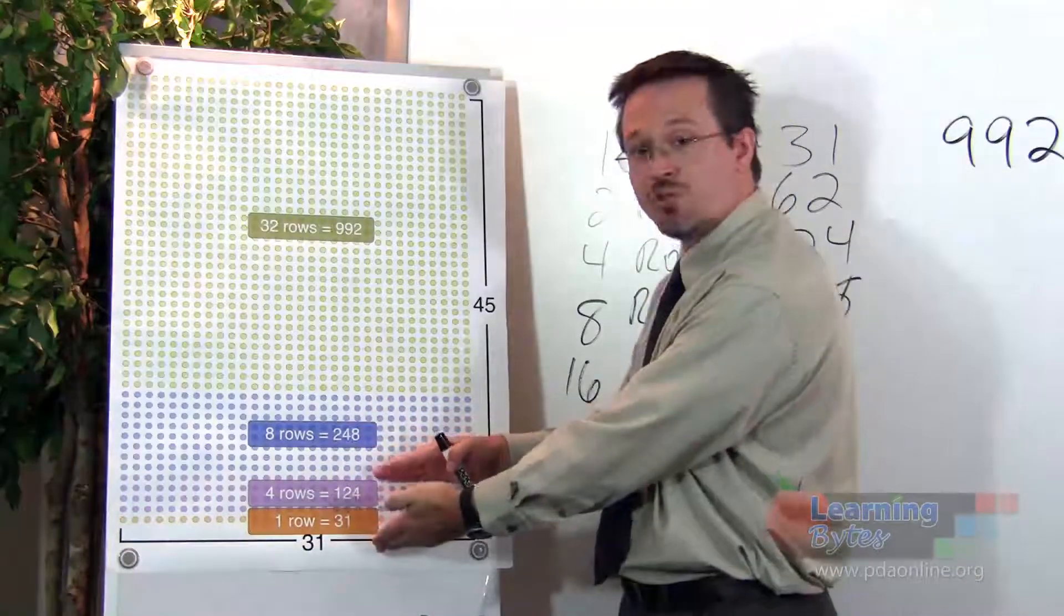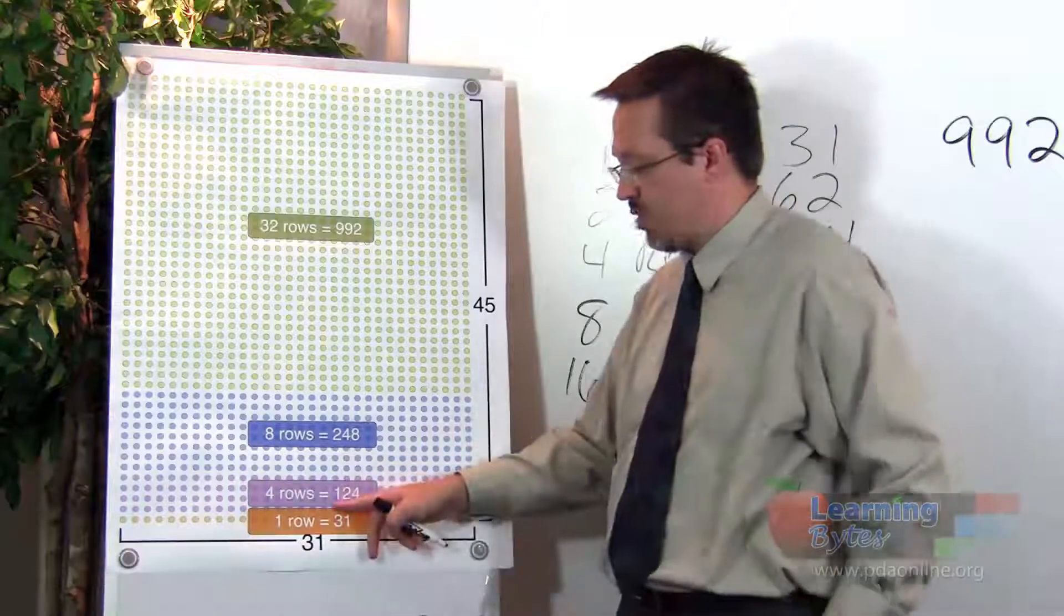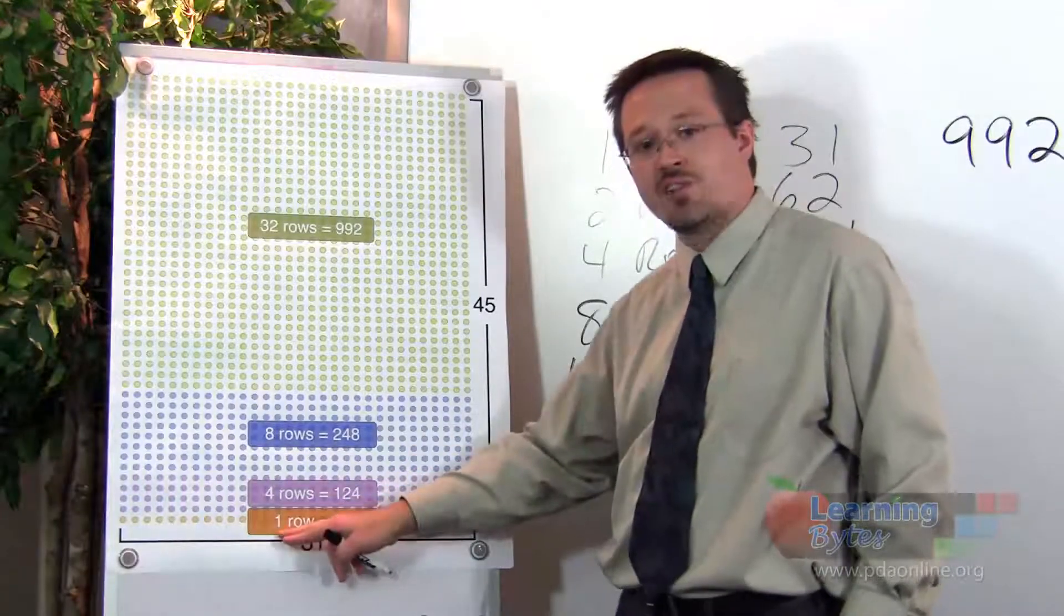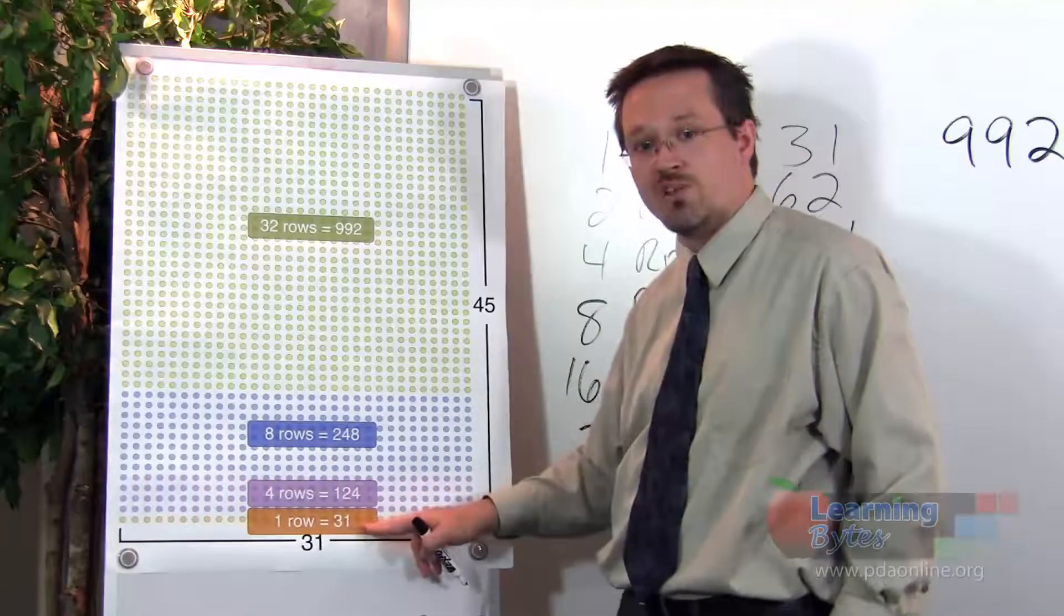So out of those 5 rows, we could pull out 4 rows, at which point we would have 124 additional students. And then in the last row, we would have 31 students.